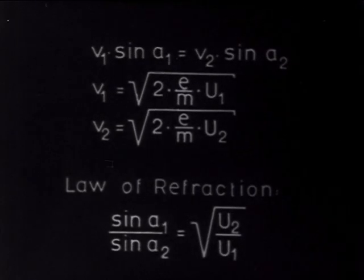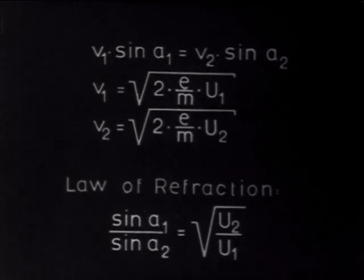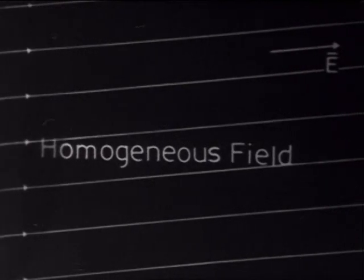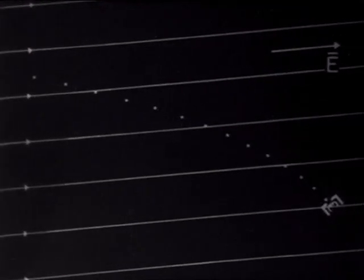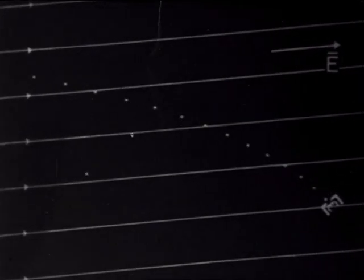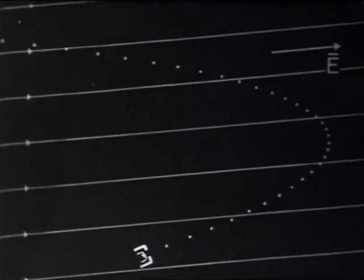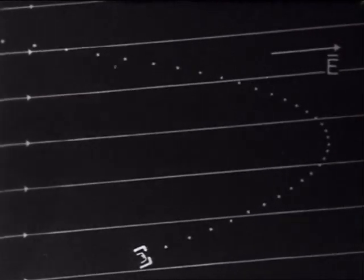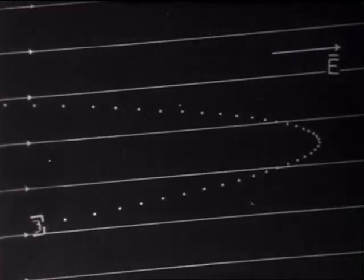The law of refraction gives the form of the electron path in complicated fields. The electron path in some different types of fields: the electrons turn back when they have been retarded by the potential difference that is equivalent to their departing velocity. In a homogeneous field, the electron path becomes a parabola.